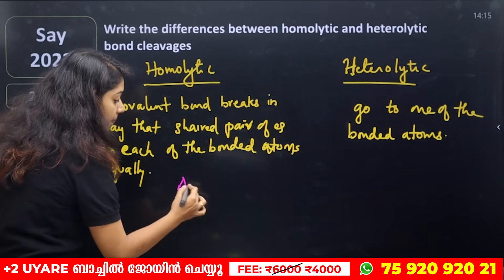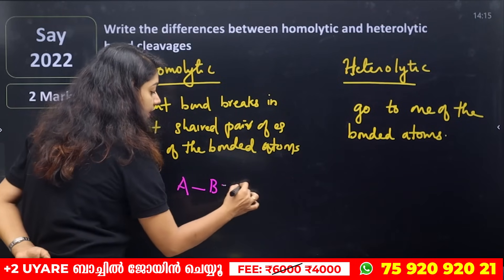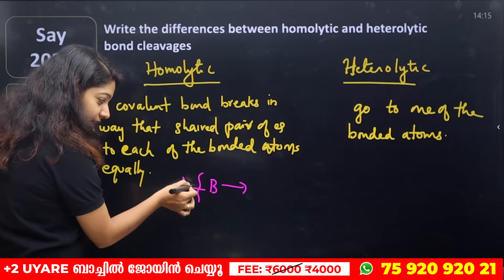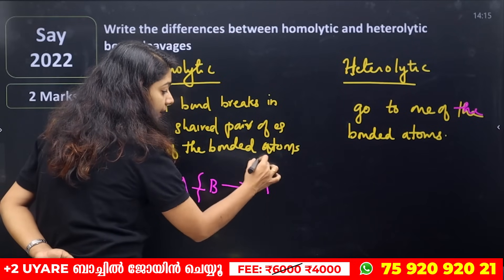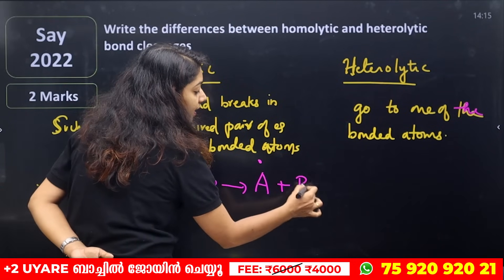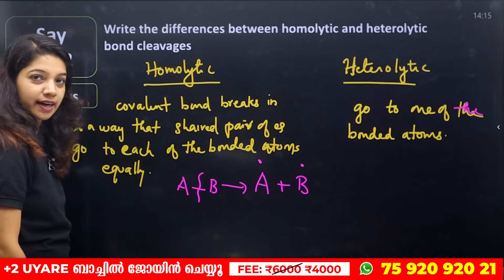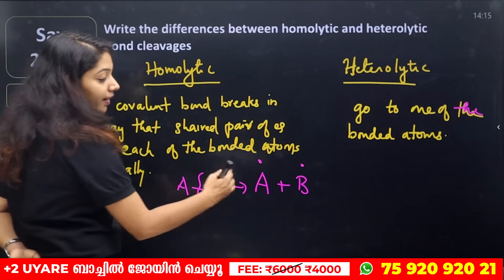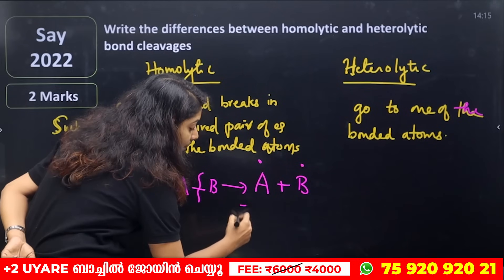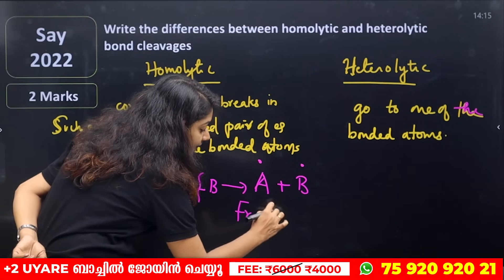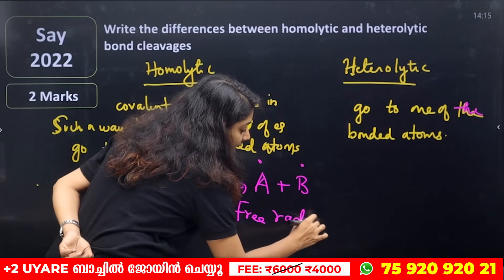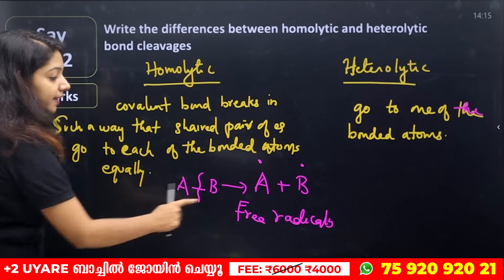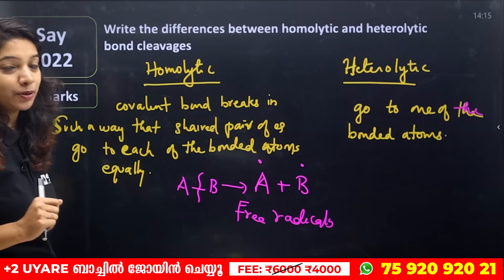We will say that homolytic is this: A and B. This bond is breaking. This shared pair — one electron goes to A and one electron goes to B. So the two electrons go to A and B. The name of the product is free radicals. The homolytic cleavage will produce free radicals.